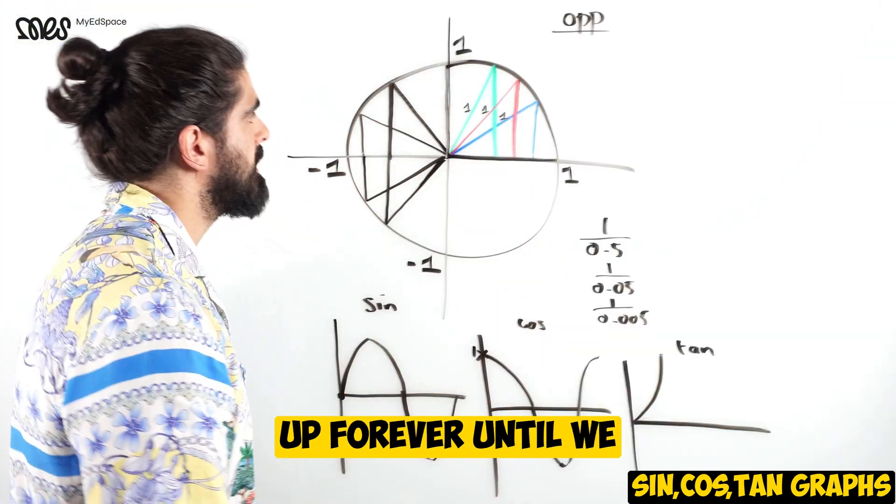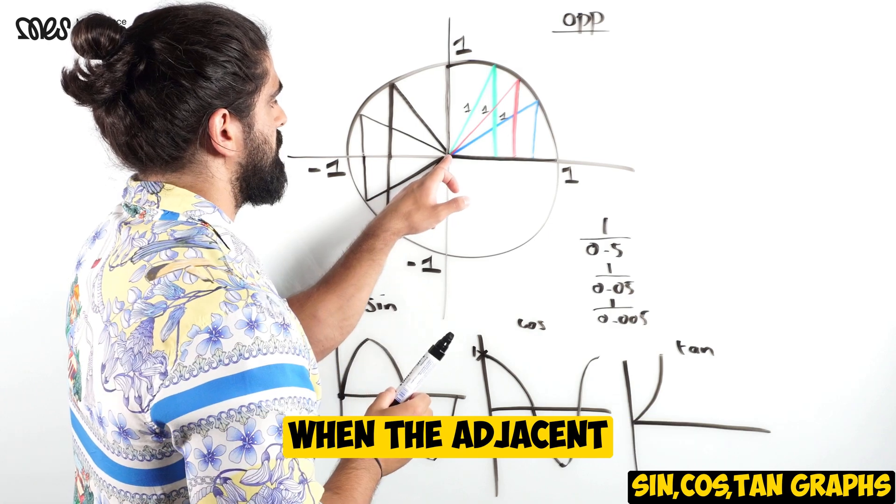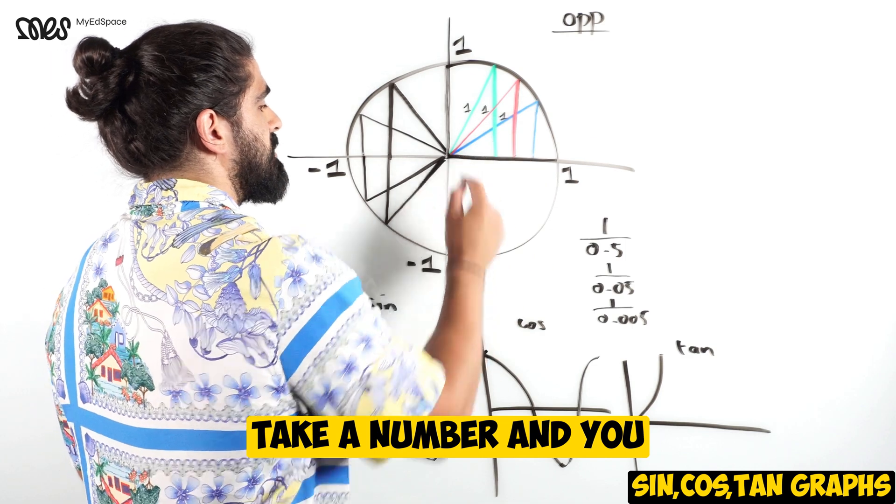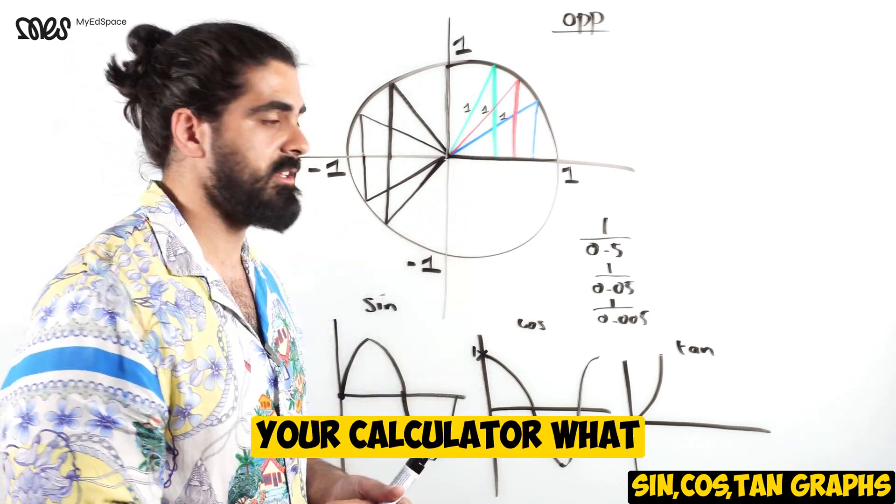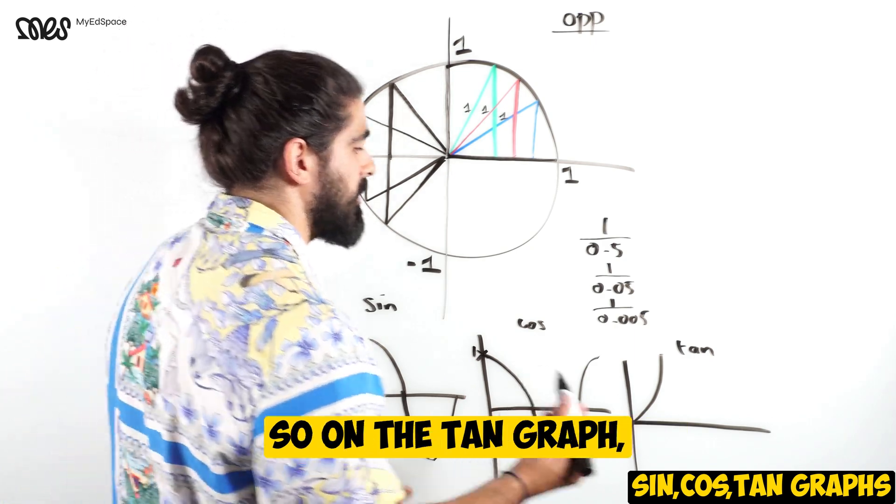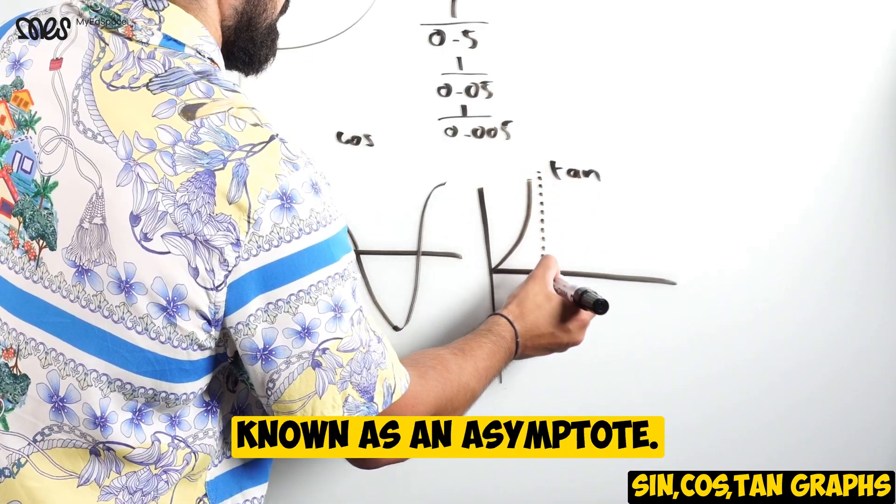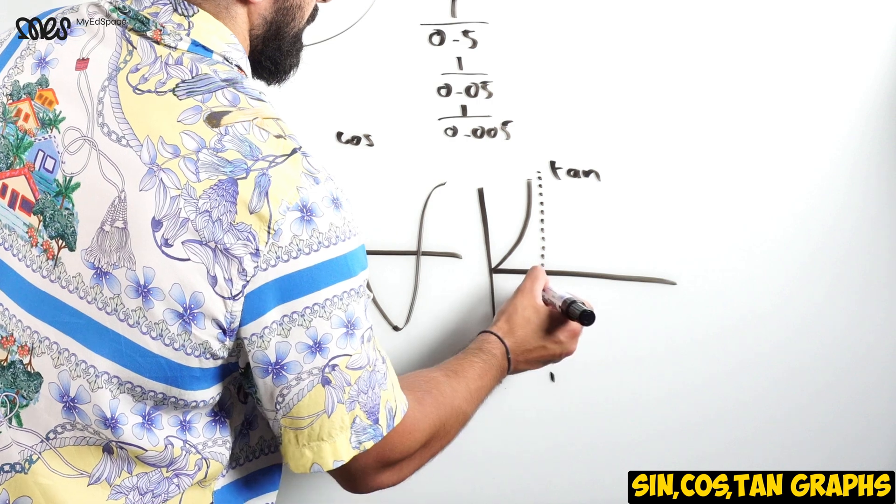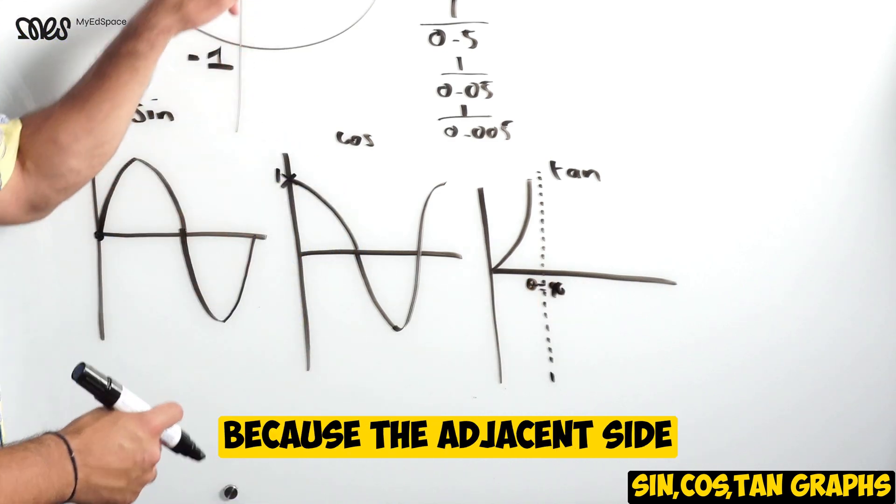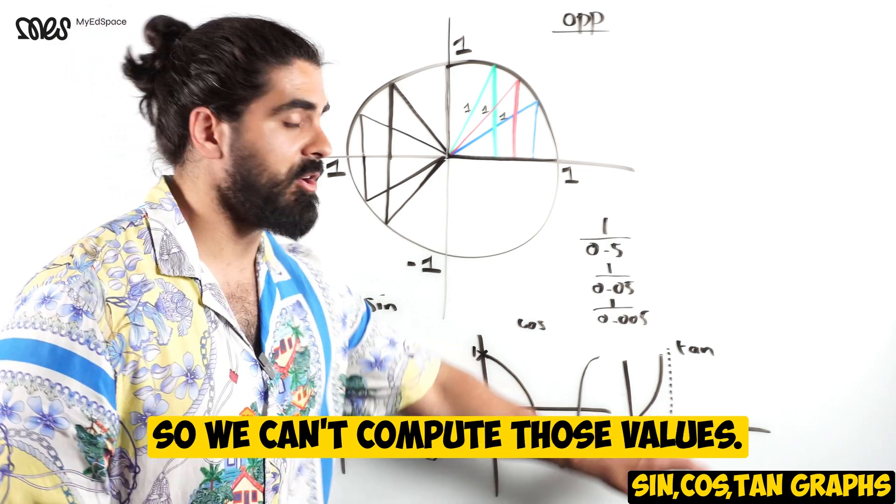It keeps going up forever until we get to this point at 90 degrees, when the adjacent side is 0, when the cos graph is 0. When you take a number and divide by 0, try in your calculator - it gives no solution, it's a maths error. So on the tan graph we have something very special known as an asymptote. When theta is 90 degrees, there is an asymptote because the adjacent side becomes 0.